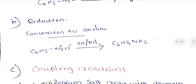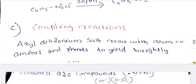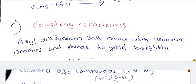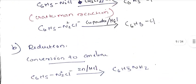The most important reaction is coupling reactions. Aryl diazonium salts react with aromatic amines and phenols to yield brightly colored azo compounds — compounds containing the N=N (azo) linkage. These are called azo dyes.